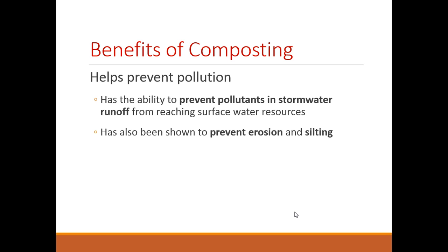Composting helps prevent pollution by preventing pollutants from entering stormwater and reaching water sources. When rain falls, it washes compounds off the topsoil, but compost binds to heavy metals and hinders that migration. Composting also prevents erosion and siltation — it hinders erosion of topsoil and the silting up of waterways.